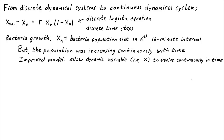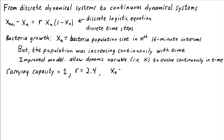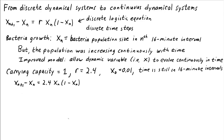To do this, let's fix parameters. I've already made the carrying capacity equal to 1 for simplicity. Let's set R, the low density growth rate, to 2.4. This isn't even close to the real bacteria parameters, but we'll use this for illustration. And we'll set the initial condition x_0 equal to 0.01. So far we still have 16-minute intervals, and our model looks like x_{n+1} minus x_n equals 2.4 times x_n times (1 minus x_n).